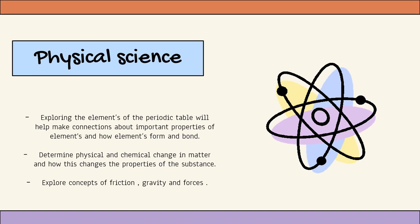Moving on, we will be determining the physical and chemical change in matter and how these changes affect the properties of the substances. We will know how to model chemical reactions in equations. We will also get introduced to the following terminology: speed, velocity, acceleration, friction, gravity, and forces, and how to calculate them mathematically.